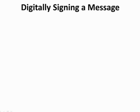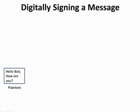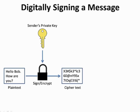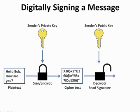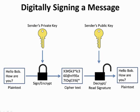In addition to encrypting messages with the recipient's public key, you can digitally sign a message by encrypting it with your own private key. When you sign a message with your private key, the recipient can verify the validity of the message using your public key. This helps to ensure that the message is legitimate and has not been altered during transit.